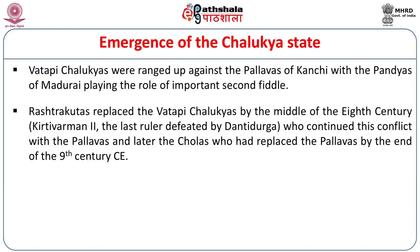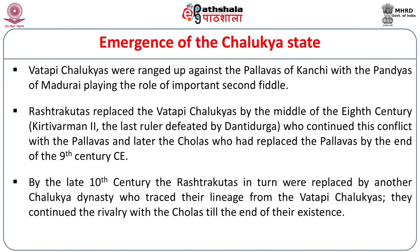When the Rashtrakutas replaced the Vatapi Chalukyans by the middle of the 8th century — with Kirtivarman II being the last Chalukyan ruler defeated by Dantidurga — the conflict with the Pallavas continued. Later, when the Cholas replaced the Pallavas in the Tamil Nadu region by the end of the 9th century, the Rashtrakutas and Cholas continued to fight each other. And when the Kalyani Chalukyans replaced the Rashtrakutas, they continued to fight with the Cholas till the end of their existence.